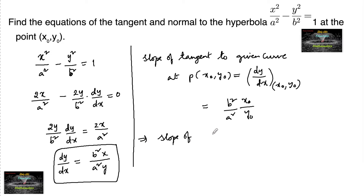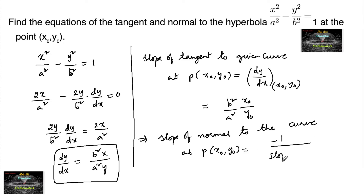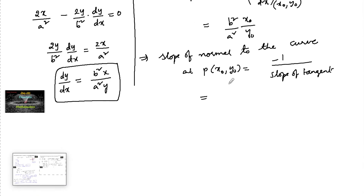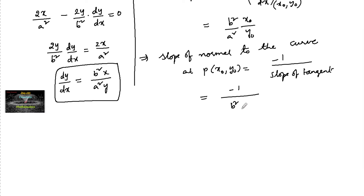Which implies the slope of normal to the curve at the same point (x₀, y₀) can be taken as minus 1 upon slope of tangent, which is equal to minus 1 / (b² / a² × x₀ / y₀), or we can write minus a² / b² × y₀ / x₀. This is the slope of normal.